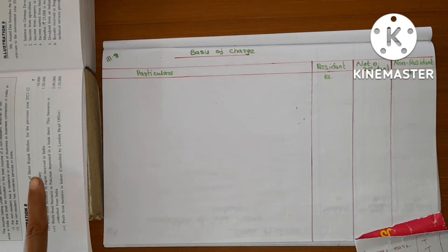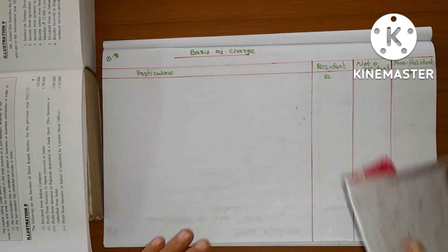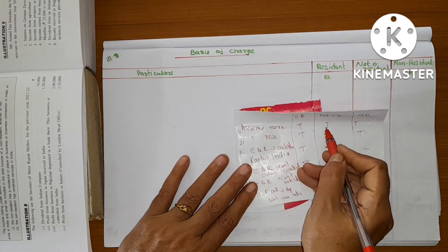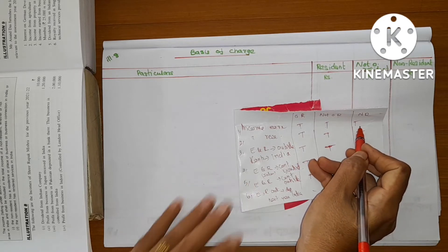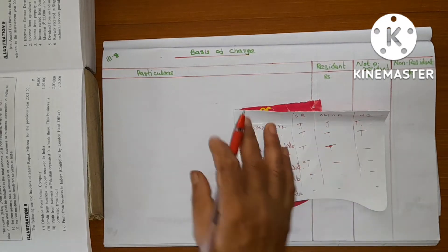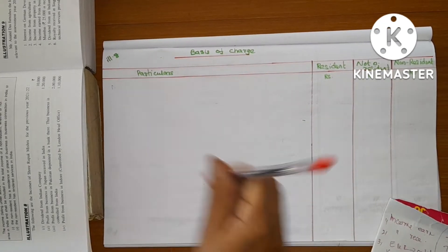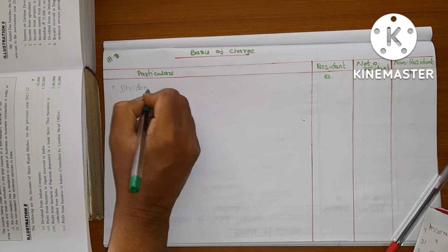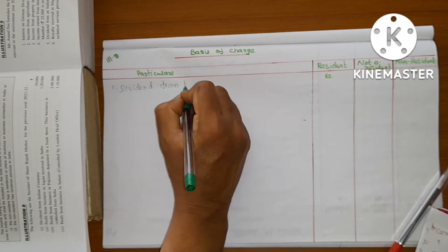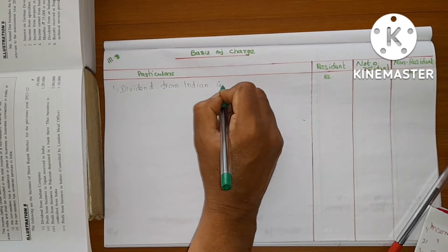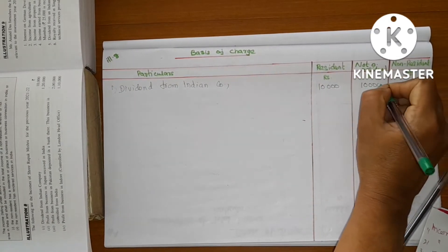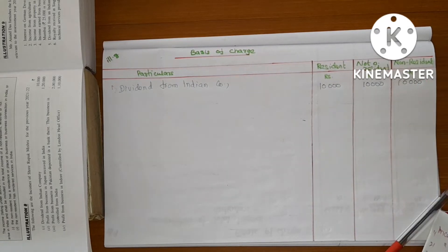Dividend from Indian company — okay, so Indian company, number one: the dividend from Indian company. How is it 10,000? Tax — 3,000.